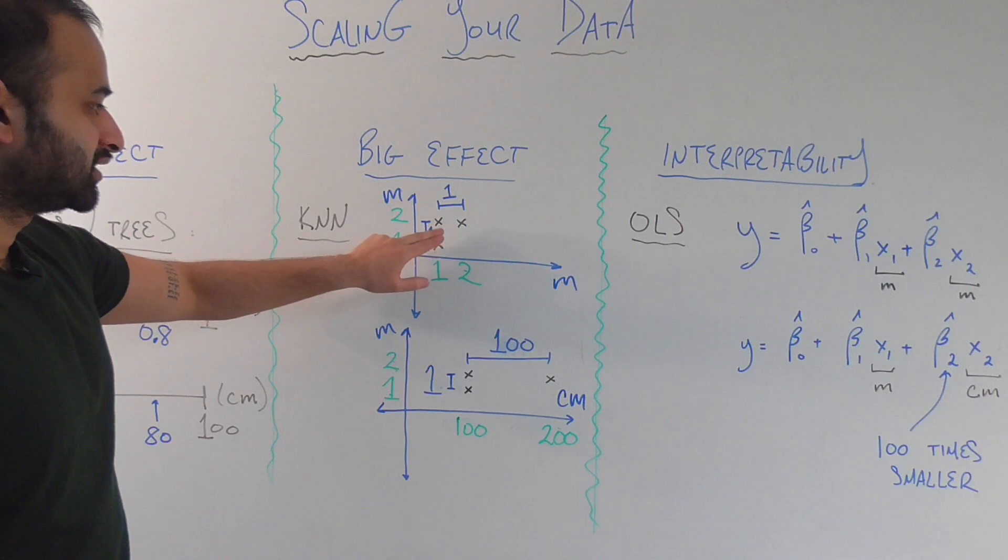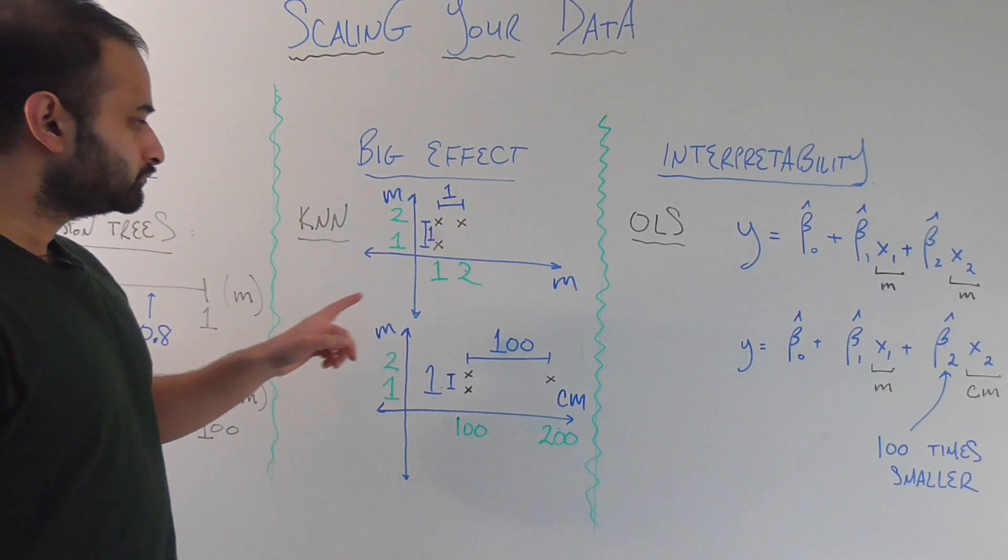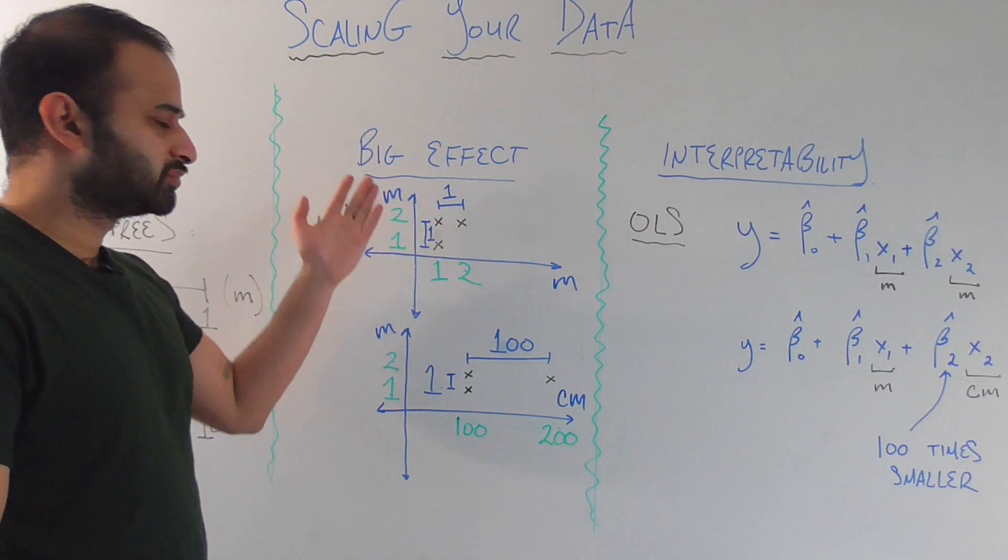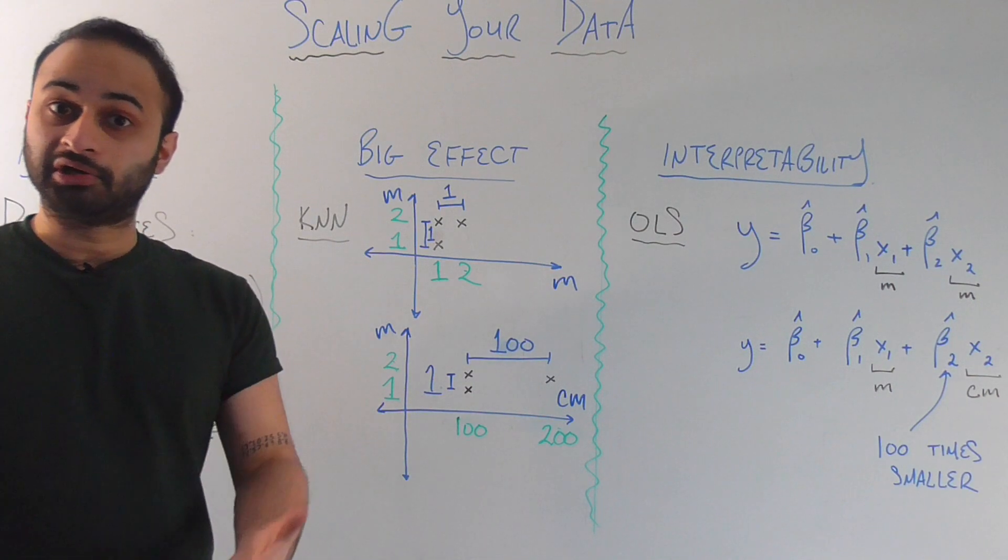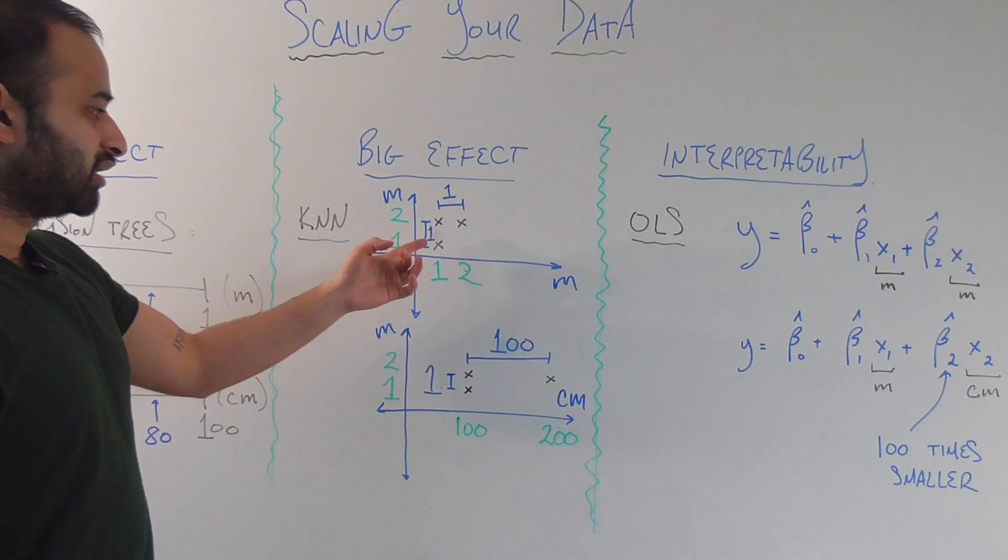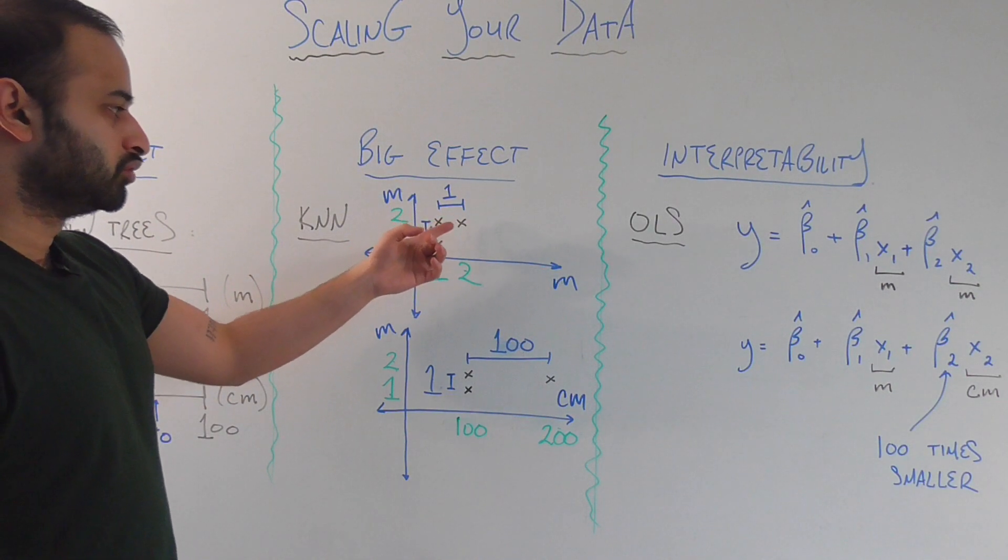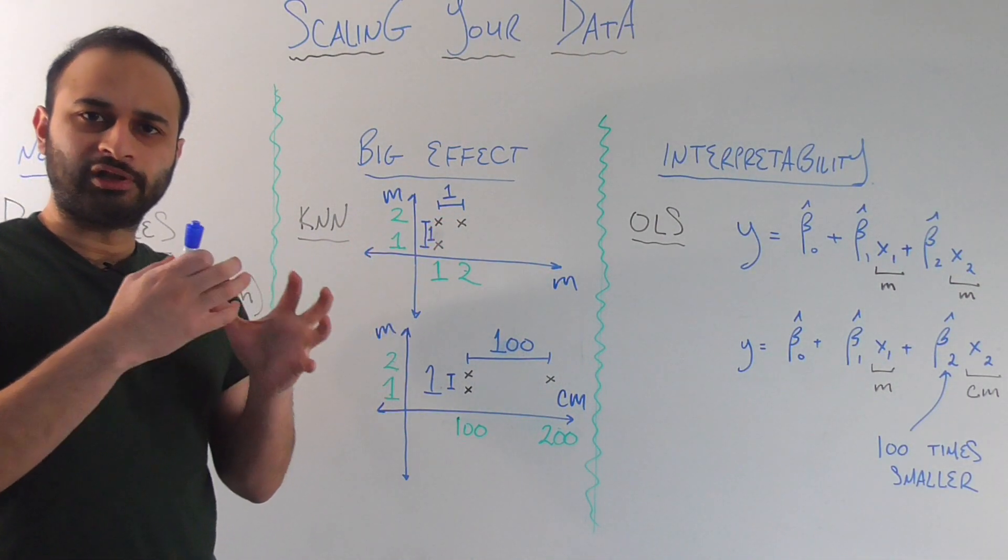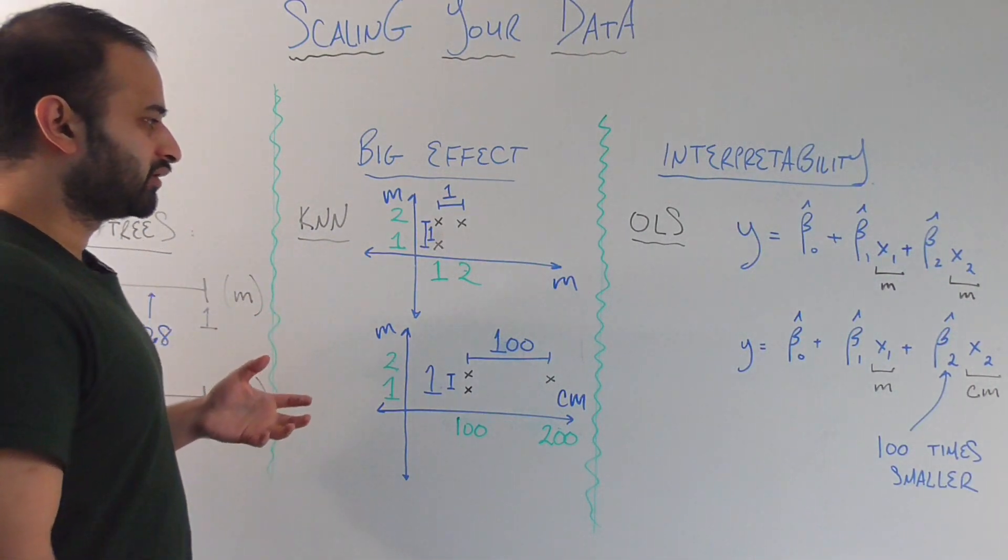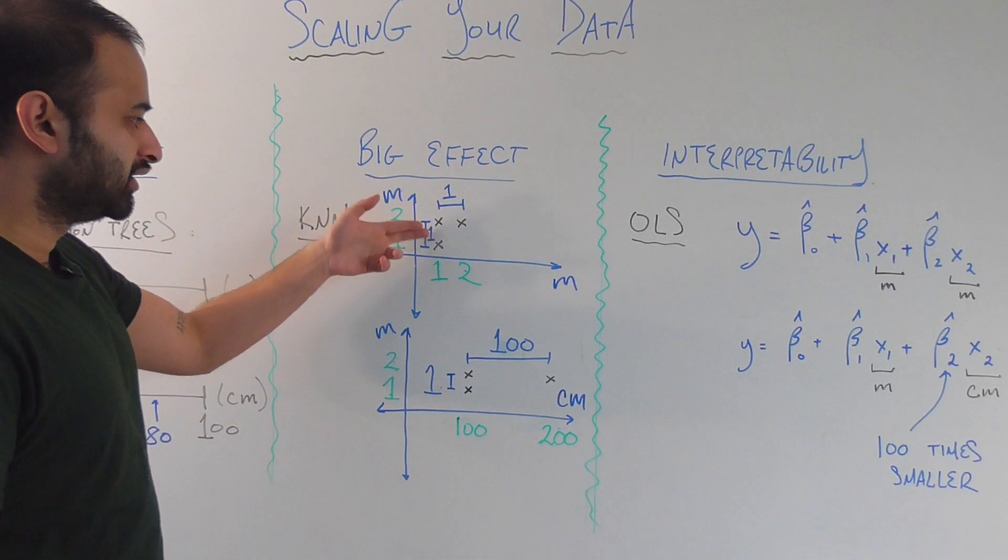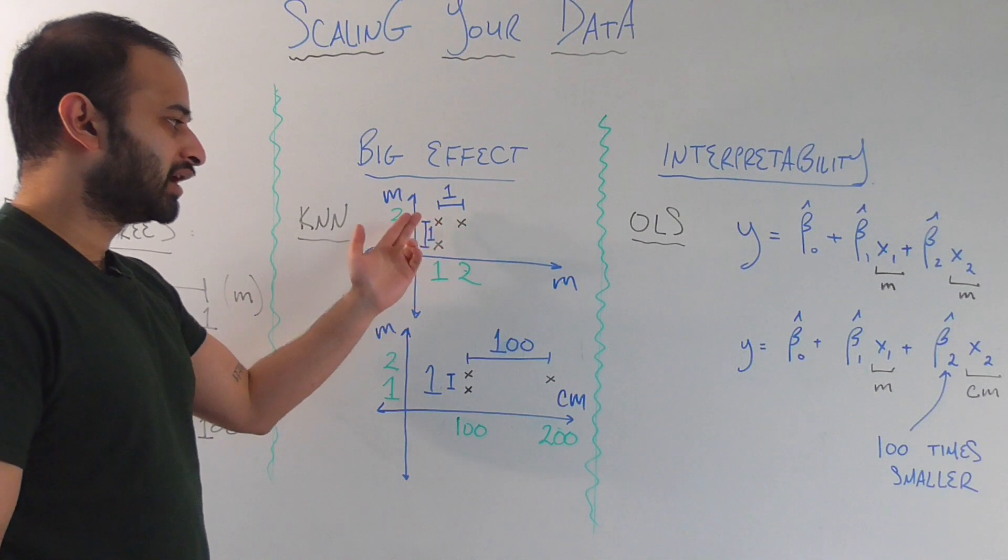We have three data points, x, x, and another x here. And let's say that both axes, both variables, are currently measured in meters. And let's say the first data point is at 1, 1. The next one is at 1, 2. And the last is at 2, 2. So these data points are all relatively close to each other. They're kind of neighbors with each other. And there's a distance of 1 between these two guys and 1 between these two guys.